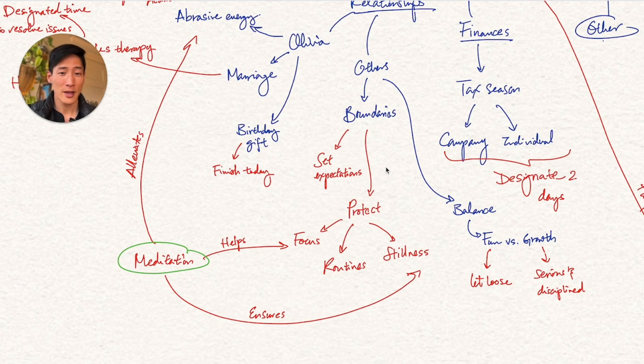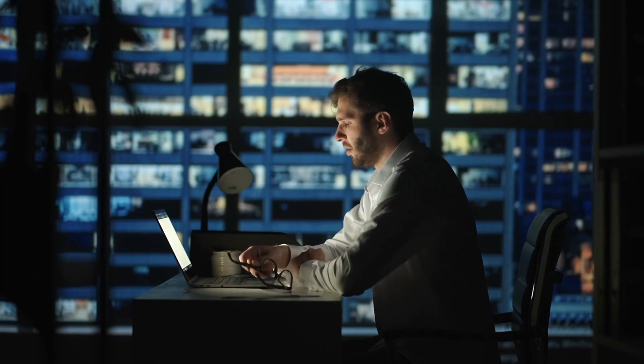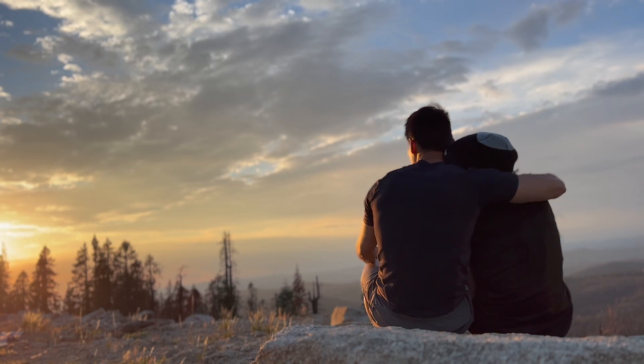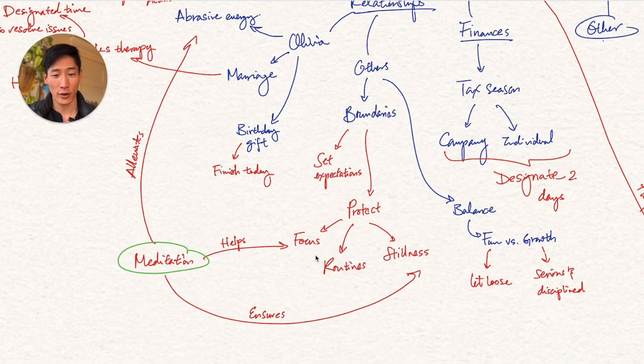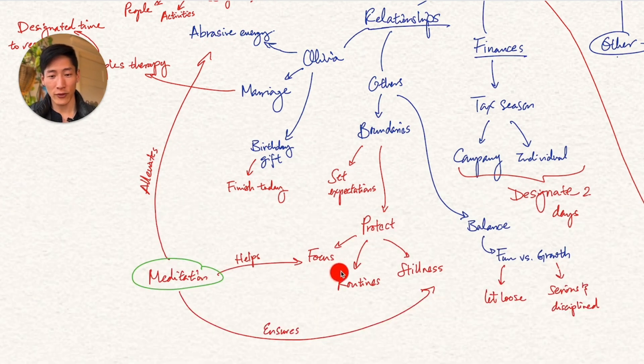Then there are boundaries. It's about communication. So for example, if my friends invite me to go out with them on Friday night, but I'm pretty tired from the entire work week and I also want to spend some quality time with Olivia, then it's about just saying no. It's about protecting my focus, guarding my routines, and my stillness so that it gives me that time and focus. Another thing that I actually put here is meditation. This is so important in many aspects of my life where it alleviates the abrasive energy that I feel with Olivia. And it helps me focus on my work as well as ensures that I have pockets and moments of stillness on a daily basis in order to just defrag my mind.